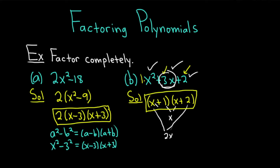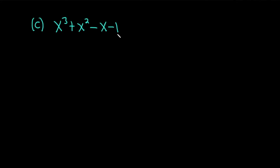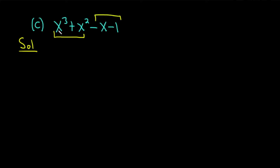Let's do a harder example. Part C, we have x cubed plus x squared minus x minus 1. Whenever you have four terms, you should automatically think about something called factor by grouping. You want to look at the first two terms and the last two terms to see if there's a common factor. Looking at the first set — x cubed plus x squared — we can pull out an x squared, giving us x squared times (x plus 1). You can check: x squared times x is x cubed, x squared times 1 is x squared.